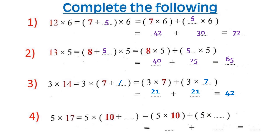5 times 17: the 5 stays the same and we break 17 into 10 plus 7. Then 5 by 10 and 5 by 7: 5 by 10 equals 50 and 5 by 7 equals 35. Then add: 50 plus 35 equals 85.